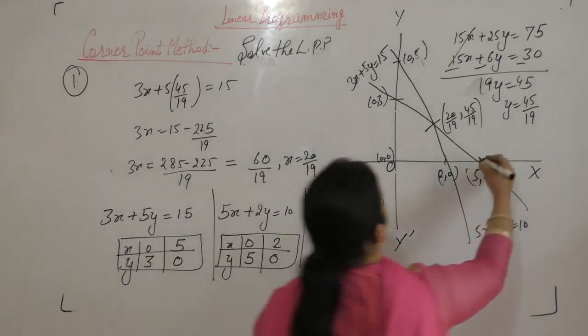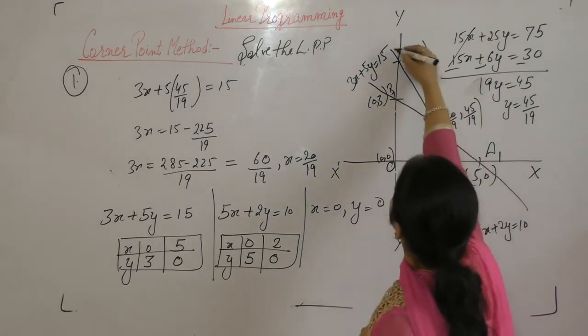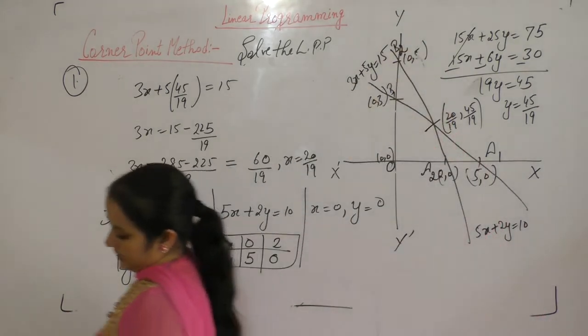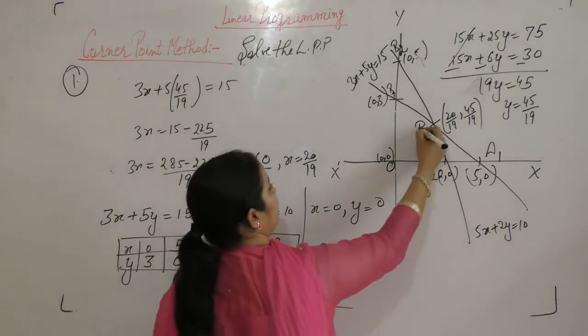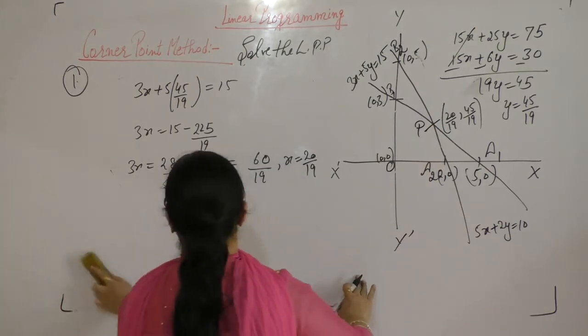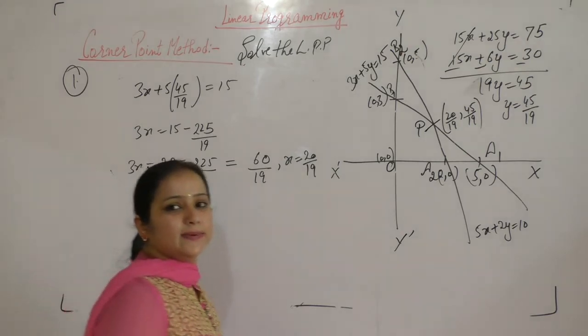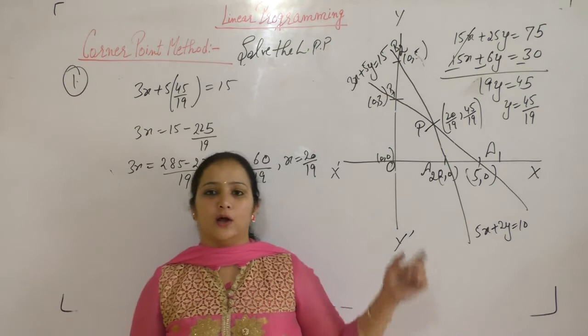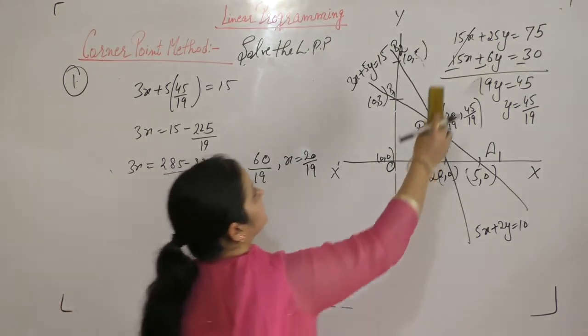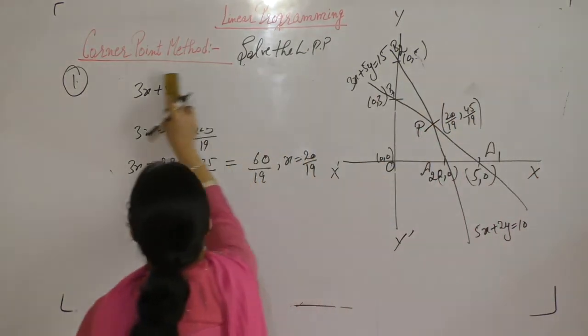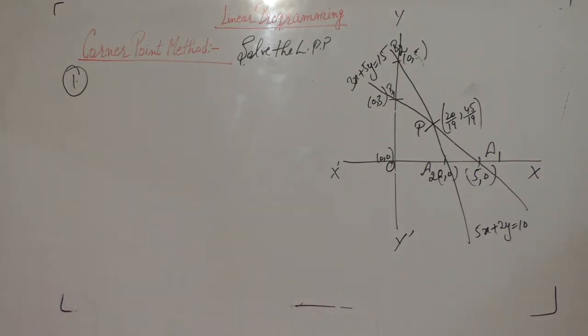So this point is 20 by 19 and 45 by 19. Let this point be A1, this is B1, this is A2, and this is B2. A1, A2, B1, B2, and point of intersection P. So first we changed the inequalities to equalities, found the points, and drew the graph.